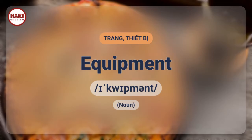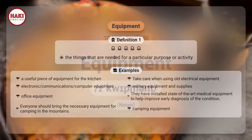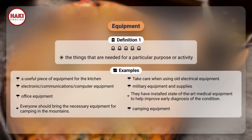Equipment. Definition 1: The things that are needed for a particular purpose or activity.